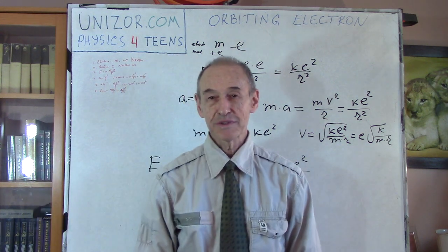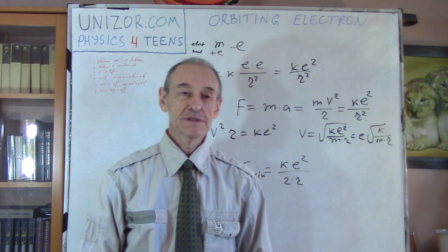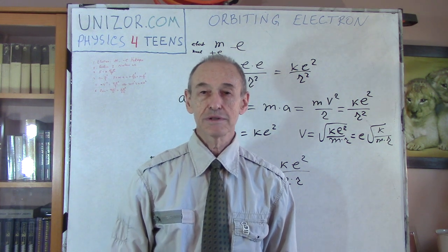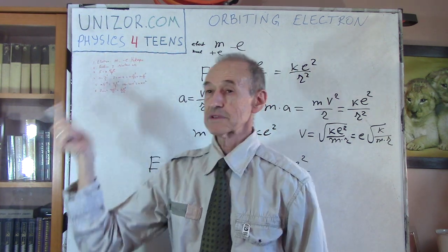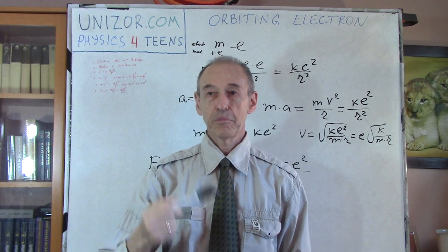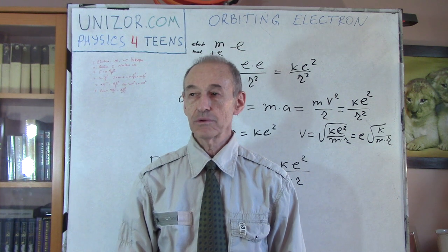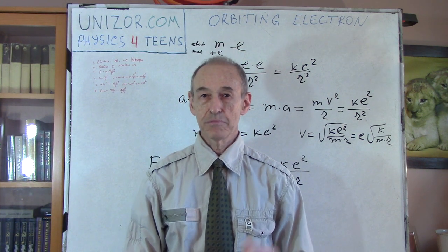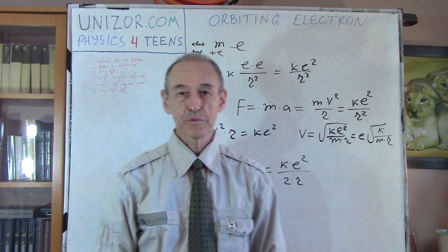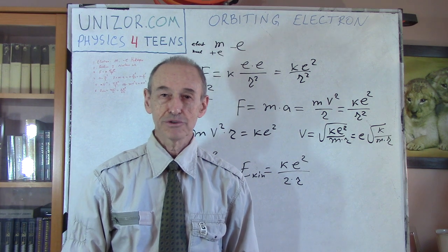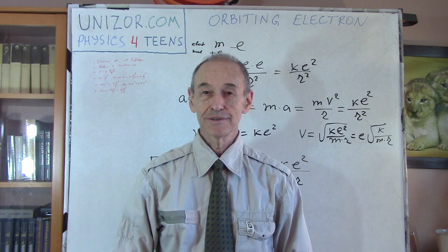I suggest reading the notes for this lecture — it's a very short, simple problem, but still worth reading. The notes are on unizor.com, in the course called Physics for Teens. There is a part of this course called Atoms, and if you click on the Atoms menu, that's the first chapter on basic building blocks of matter. Inside that chapter is the Orbiting Electron lecture. All menu-driven. Thank you very much, and good luck!